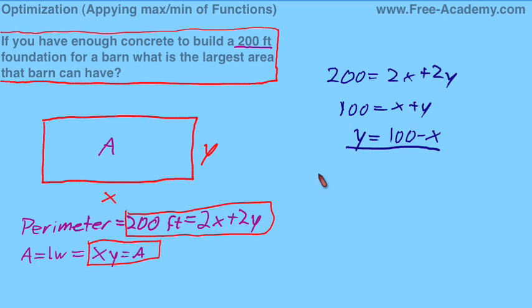Let's put that into our area equation now, and our area is going to equal x times (100 minus x). Distributing that through, we get the area equals 100x minus x squared.